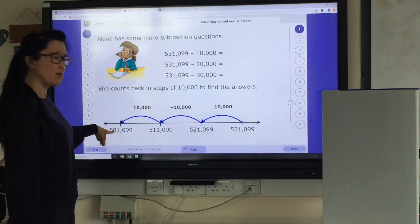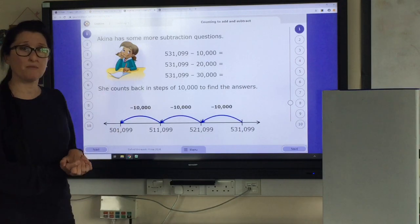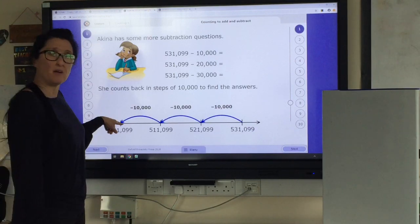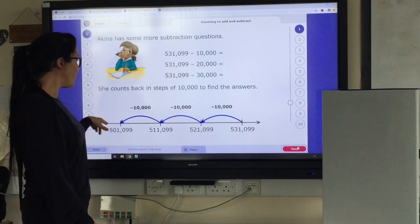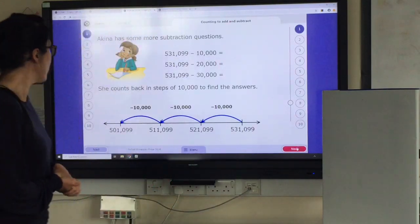And you know what would happen here. What would happen here if we've got 501,000 and I wanted to subtract 10,000? What would it become? I'm hoping you're telling me that it would become 491,099. Let's move on.